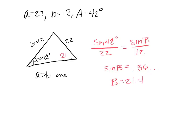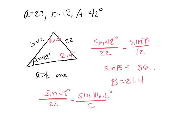So that's 21.4 degrees. Then I can take that away from 180 and take away 42, and I get 116 for this angle. Then I'm left with finding side C, and I can use the law of sines again: sine of 42 degrees over 22 equals sine of 116.6 degrees over C.